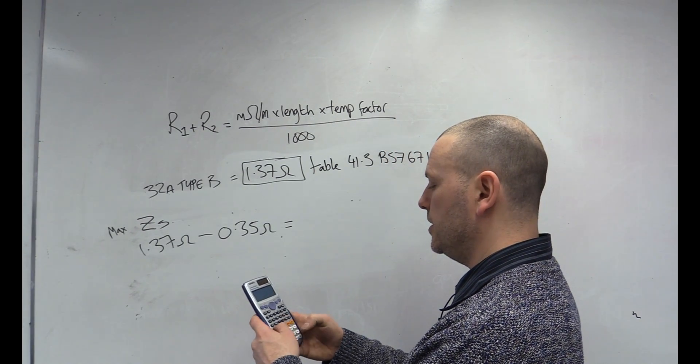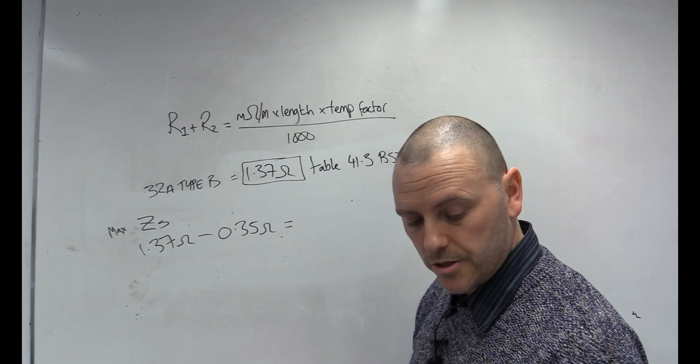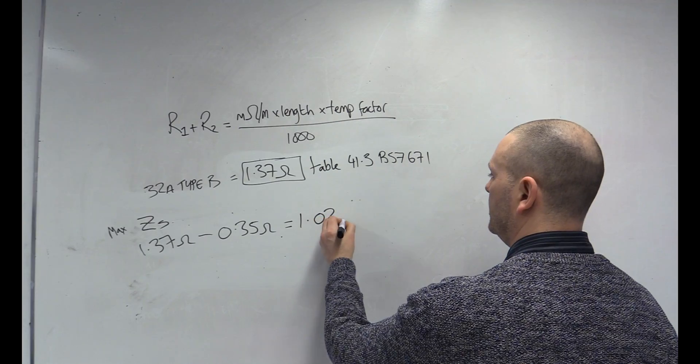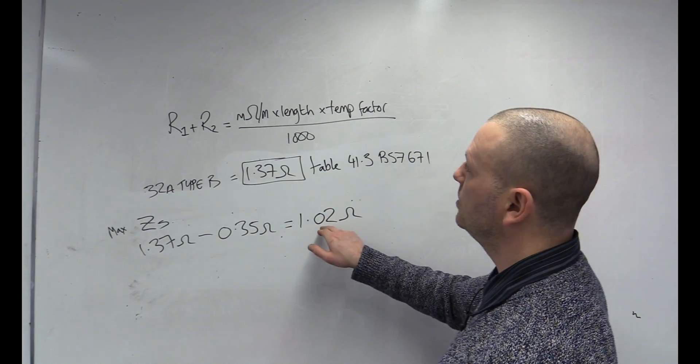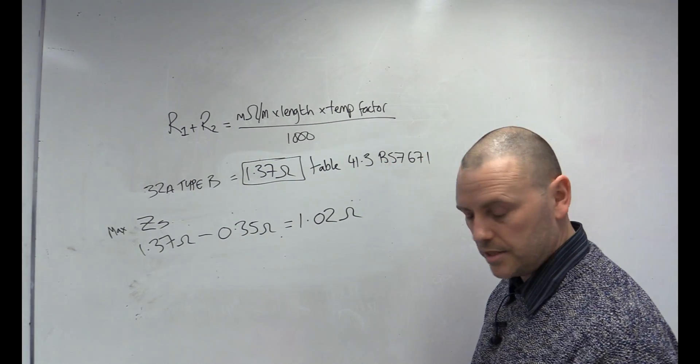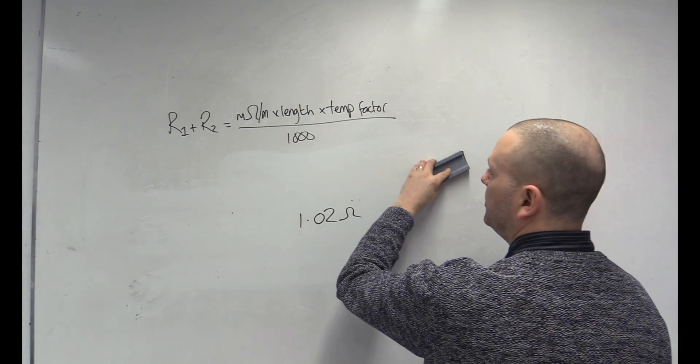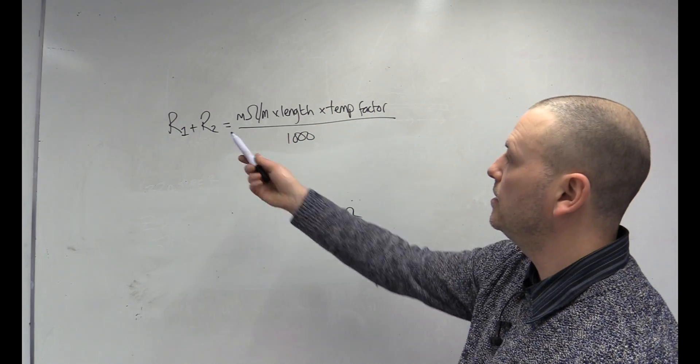Perfect. So, 1.37 minus 0.35 gives us an R1, R2 of 1.02. Fantastic. So, now we know what our maximum R1, R2 is.